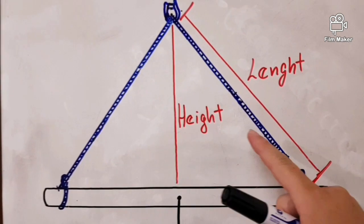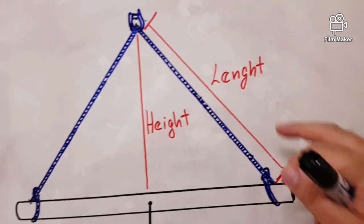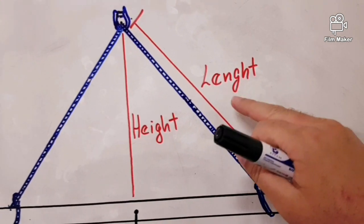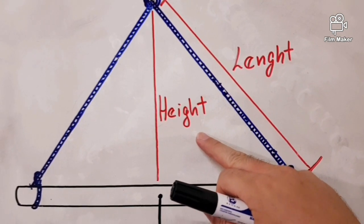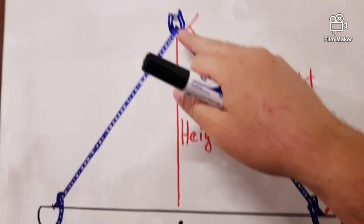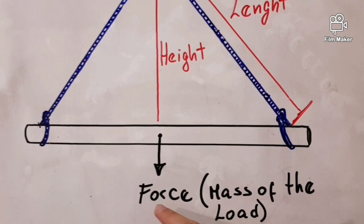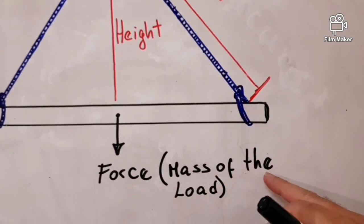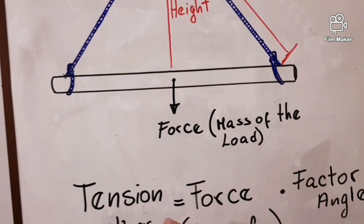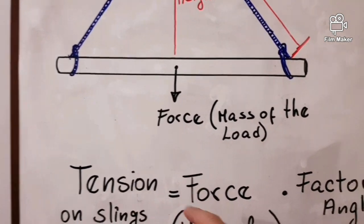Whenever we want to calculate tension on the slings, both of them, we need the length of the slings, the height between this point and this point of the load, and of course the force, which is the mass of the load.